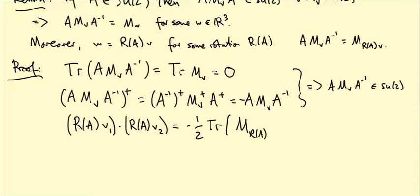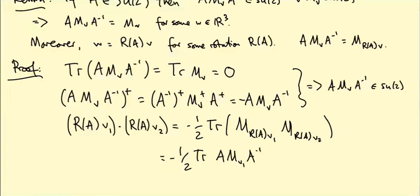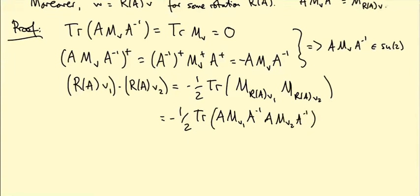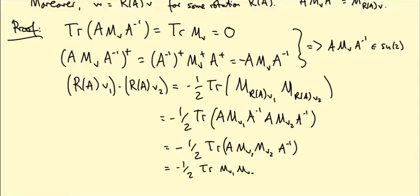By definition of R_A, M_{R_A v₁} = A·M_{v₁}·A⁻¹, so we get −½ trace(A·M_{v₁}·A⁻¹·A·M_{v₂}·A⁻¹). The A⁻¹ and A cancel, giving −½ trace(A·M_{v₁}·M_{v₂}·A⁻¹) = −½ trace(M_{v₁}·M_{v₂}) = v₁·v₂. So R_A is orthogonal.